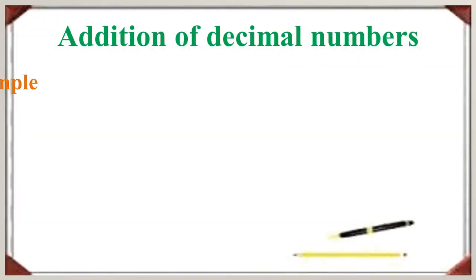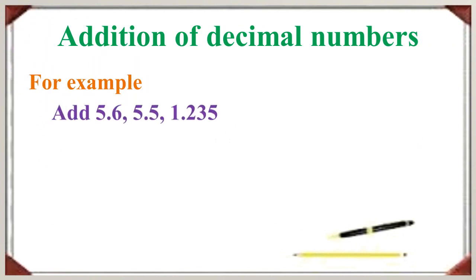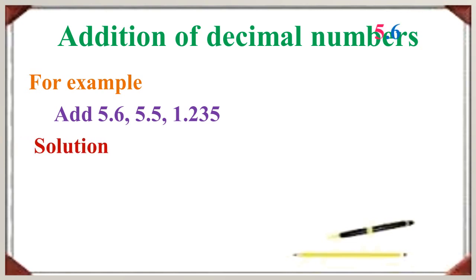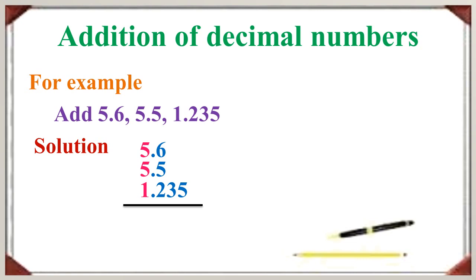Let us see one more example. Add 5.6, 5.5 and 1.235. First, we are going to write all the decimal numbers vertically: 5.6, 5.5 and then 1.235. Are the given numbers like decimals? No, they are not like decimals.